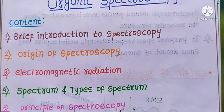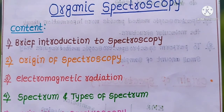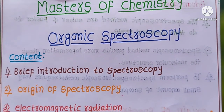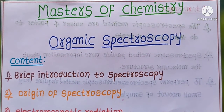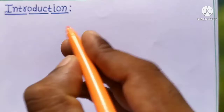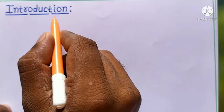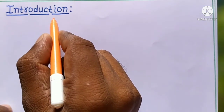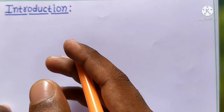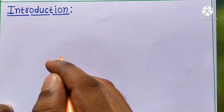So let's start to study what is meant by spectroscopy and how the origin of spectroscopy takes place. Spectroscopy is a relatively modern technique, generally used for the identification of structure and functional groups present in the organic compound.